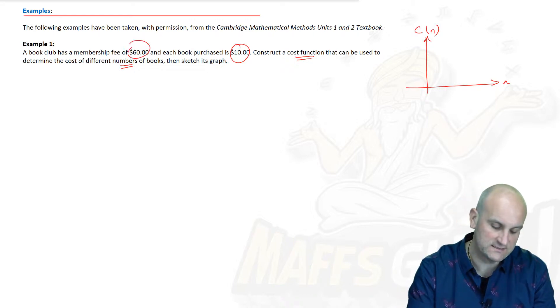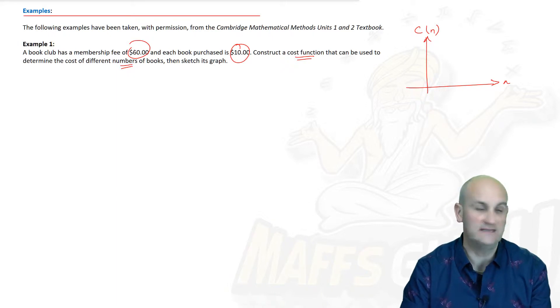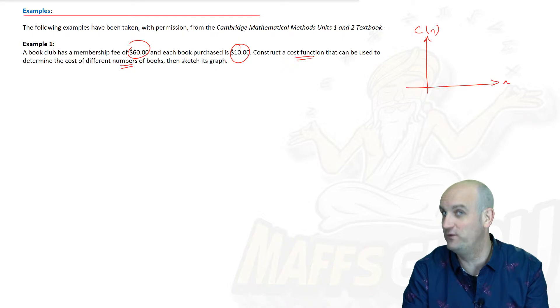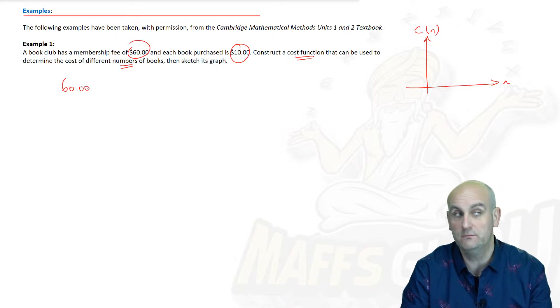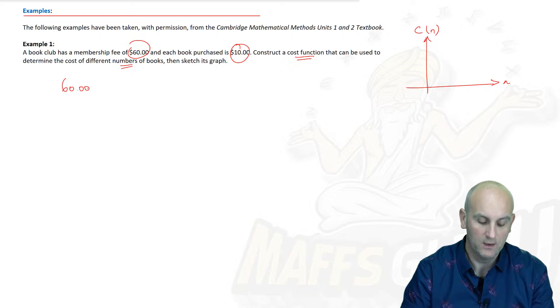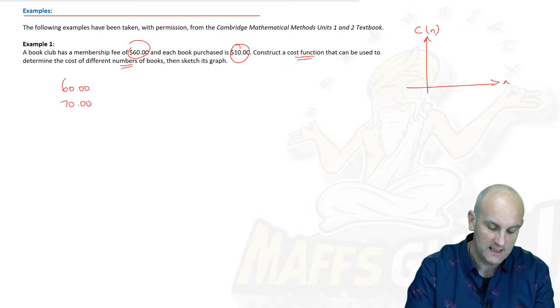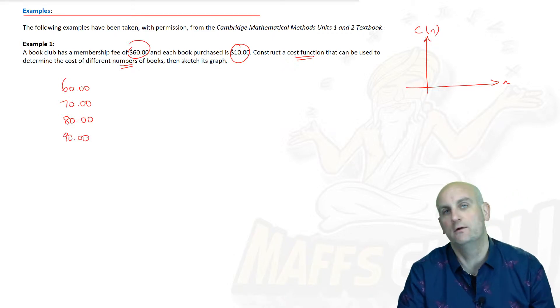We have a fixed fee here. If you're a taxi user, whenever you get into your taxi, they're going to charge you a fee before you even leave. That's called a flat fee. You're going to pay that regardless of how far you go. So my membership fee is going to be $60. But what happens if I don't buy any books? It's going to charge me $60. What if I buy one book? It's going to be $70 and two books is $80 and three books is $90.